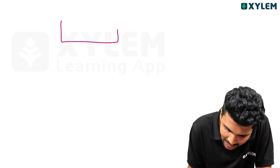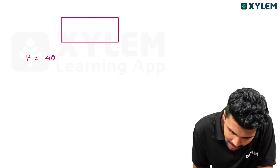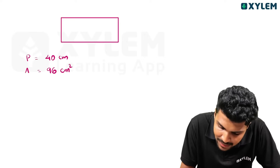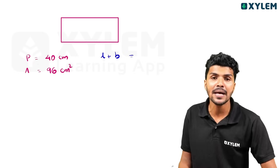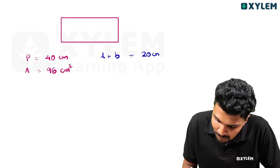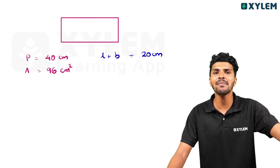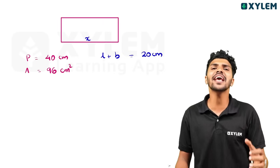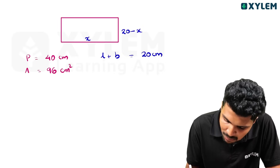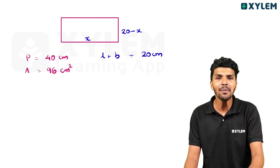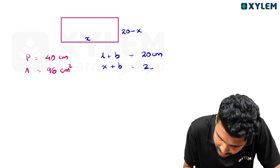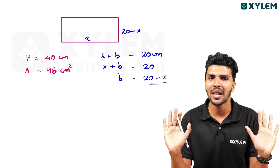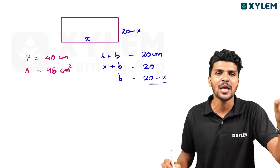The perimeter of the rectangle is 40 cm and the area is 96 cm². Since perimeter is 40 cm, length plus breadth equals 20 cm. If we call the length X, then the breadth is 20 minus X. So length equals X and breadth equals 20 minus X.